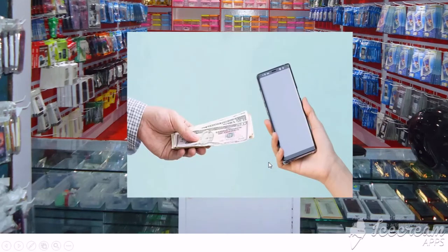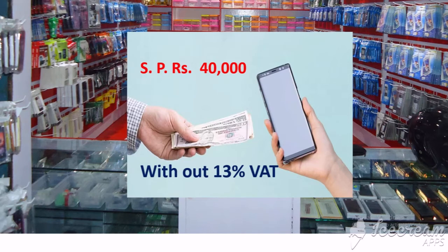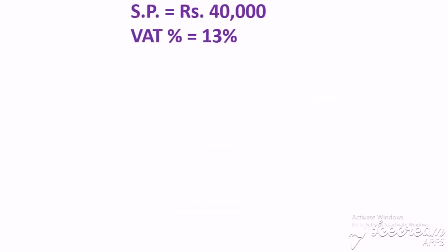I am going to give you some numerical problems. Here is one mobile, and the selling price of this mobile is Rs. 40,000. This price is without including 13% VAT. Now we are going to find the VAT amount. The selling price is Rs. 40,000 and VAT percent is 13%.